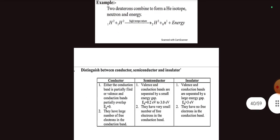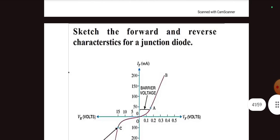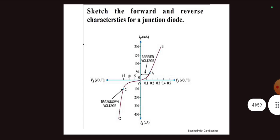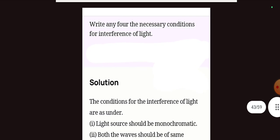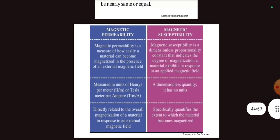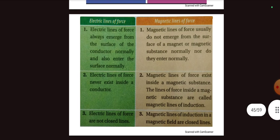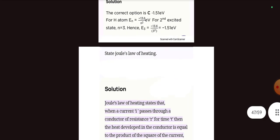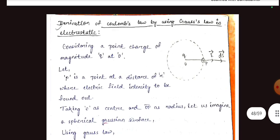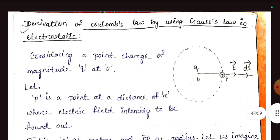Then difference between conductor, semiconductor, insulator on the basis of energy band theory. Forward or reverse bias, the graph. Draw the circuit diagram of half-wave or full-wave rectifier. Practice circuit diagram, that's very more necessary. Derivation of Coulomb's law by using Gauss law in the electrostatic is extremely very very important. Supply derivation of Coulomb's law by using Gauss law in the electrostatic.